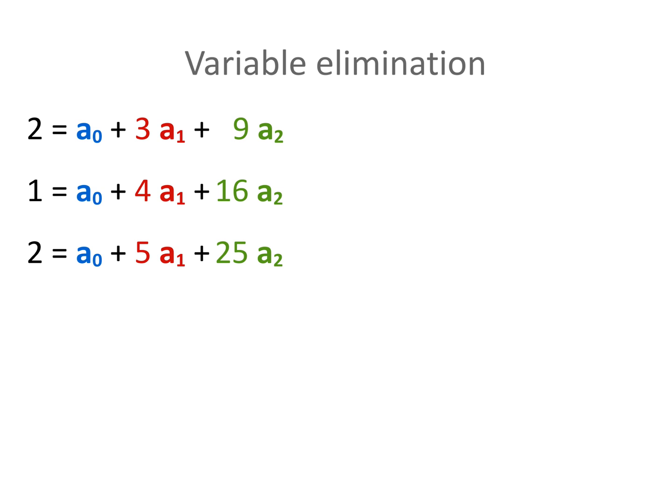We start by using the first equation to express a0. The equality tells us that a0 is equal to 2 minus 3 times a1 minus 9 times a2. We are going to go ahead and replace the first equation by this expression for a0, since it contains exactly the same information, just expressed differently.